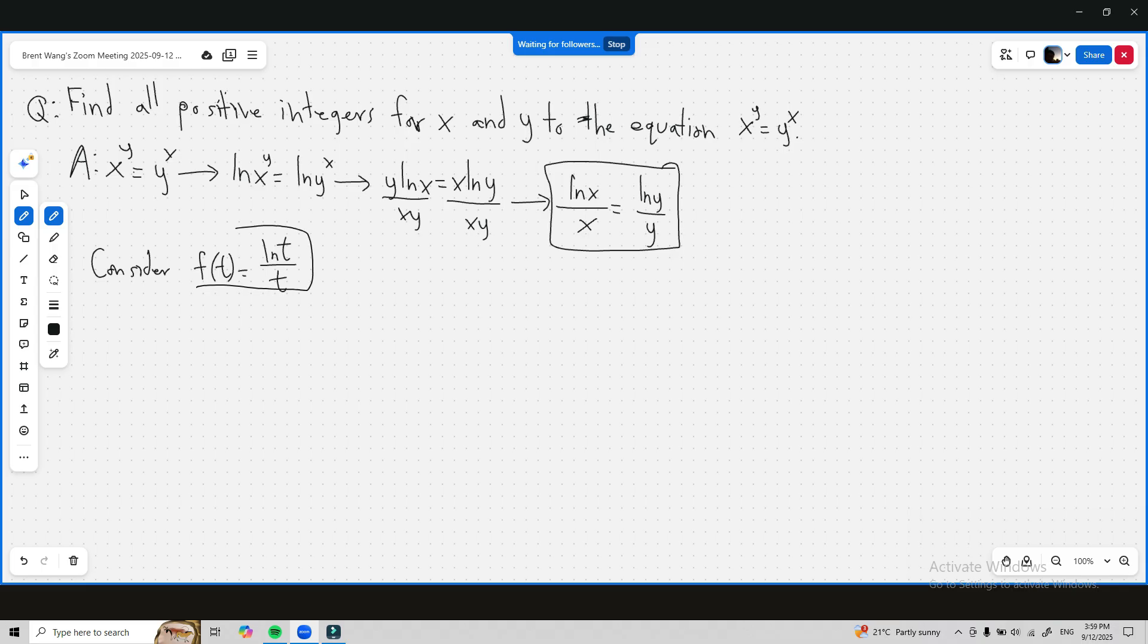Consider this function and let's do some calculus on it to see when this function increases and decreases. So f prime of t is equal to when you do it you'll see it's one minus ln t divided by t squared.